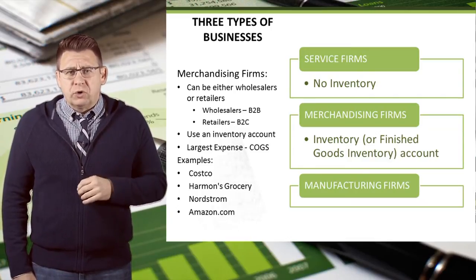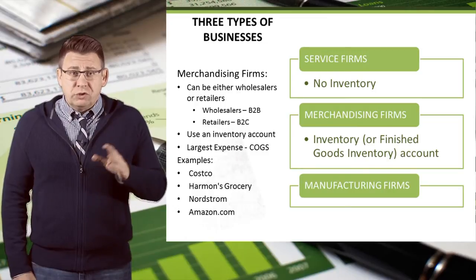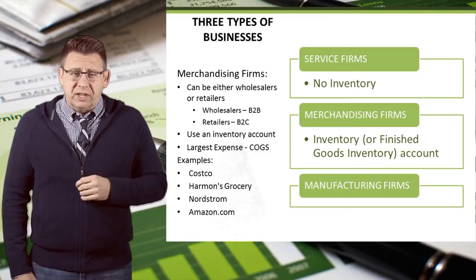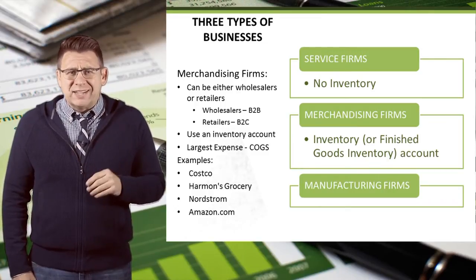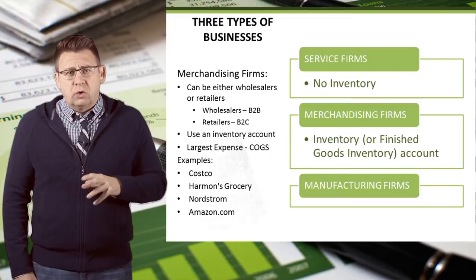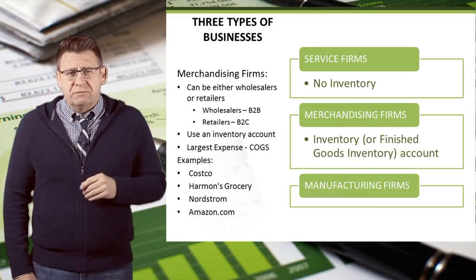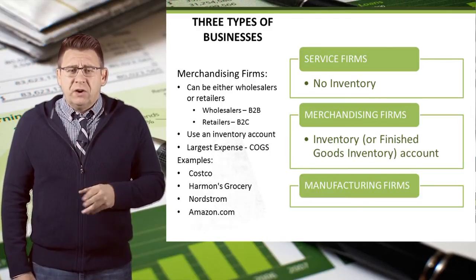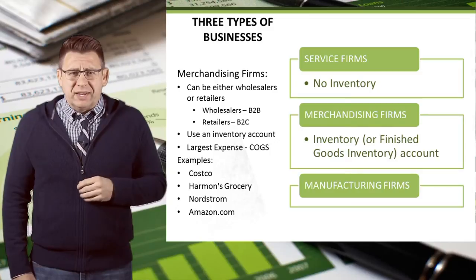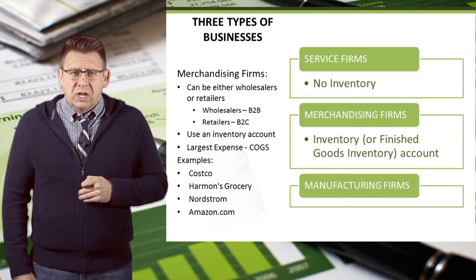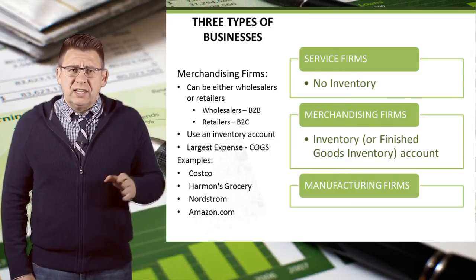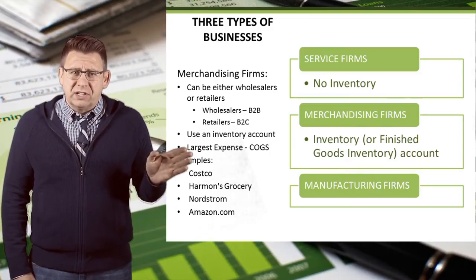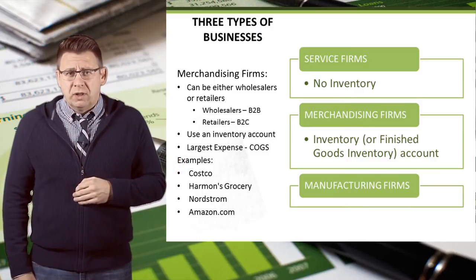Merchandising firms use one inventory account, which you learned about in financial accounting — we called it merchandise inventory, finished goods inventory, or just plain inventory. Their largest expense tends to be cost of goods sold. You can see some examples here, but clearly there are many more.